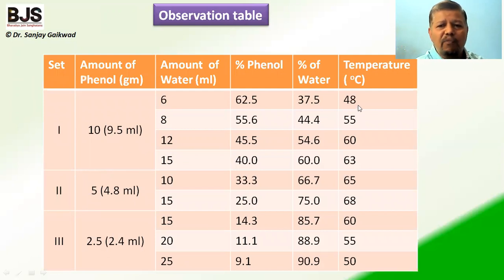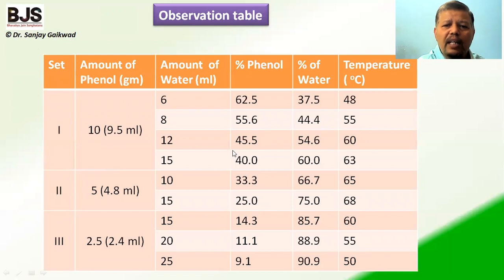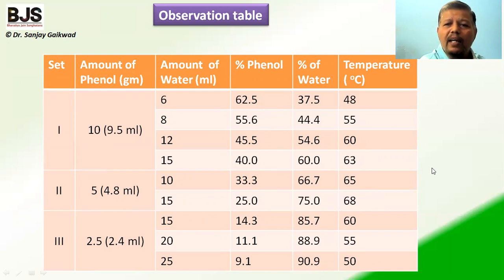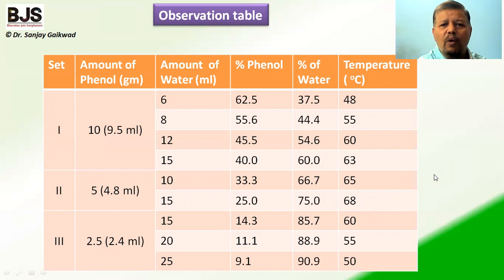For the first set, we observed 48°C for the first combination, 55°C for the second, and 60°C for the third. As we decrease the percentage of phenol and increase the water, it is observed that a maximum temperature — around 65°C to 68°C — is reached at which the phenol and water combination is exactly miscible. This highest temperature is the critical solution temperature of the phenol-water system.